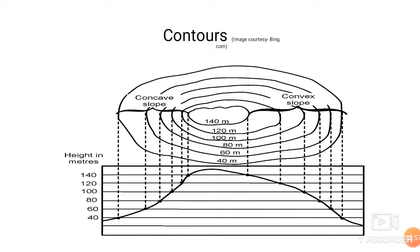Always remember that contours are imaginary lines. When we go in the field, we do not observe such lines actually — we just imagine them for the purpose of understanding. Here we can see contour lines at 40, 60, 80, 100, 120, and 140 meters, meaning the contour interval is 20 meters. Two opposite points are joined by a line called a contour line, or simply a contour. Concave slope and convex slope are also shown, with contours joining points on opposite sides.